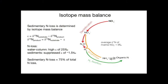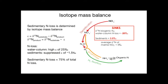Here's an example of how we estimate sedimentary nitrogen loss by isotope mass balance. If we assume the average delta 15N of marine nitrate — about 5 per mil — didn't change significantly during the Holocene, then sources and sinks must balance both in flux and isotopic composition. The isotope effect of water column nitrogen loss is about 25 per mil, giving a delta 15N of biogenic N2 of about minus 20 per mil. In sediments, the isotope effect is suppressed to about 1.5 per mil — because nitrate is mostly fully consumed and diffusion is limiting — giving a delta 15N of biogenic N2 for sedimentary denitrification of about 3.5 per mil.